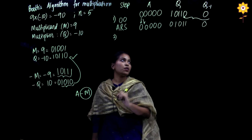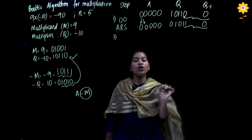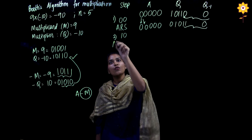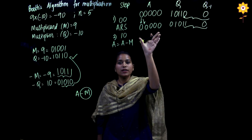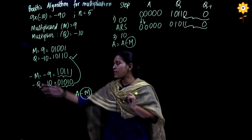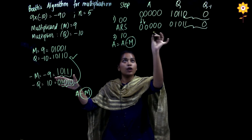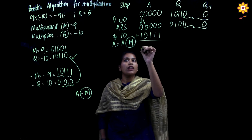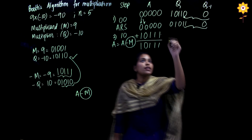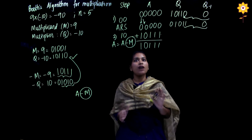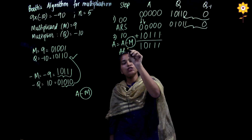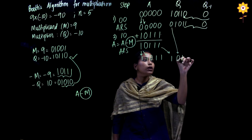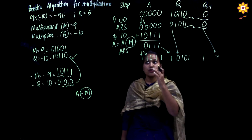Step 2: Compare Q0 and Q minus 1. The combination is 1 and 0. When the combination is 1 and 0, we do A minus M — meaning the accumulator content is added with minus M (which is 10111). Since the accumulator is all zeros, the result is 10111. Then we perform an arithmetic right shift, getting the updated A and Q registers, with the last bit discarded. Step 2 is complete.